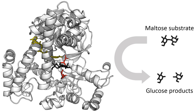Some enzymes are used commercially, for example in the synthesis of antibiotics. Some household products use enzymes to speed up chemical reactions. Enzymes in biological washing powders break down protein, starch, or fat stains on clothes, and enzymes in meat tenderizer break down proteins into smaller molecules, making the meat easier to chew.